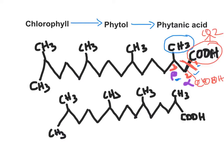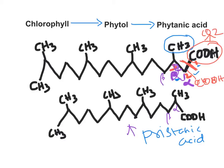Because one carbon is released as CO₂, the 20-carbon phytanic acid is converted to pristanic acid, a 19-carbon fatty acid. The numbering shifts: the original second carbon becomes the first, and the third becomes the second. Now the beta carbon is free of a methyl branch, so regular beta oxidation can proceed on pristanic acid.